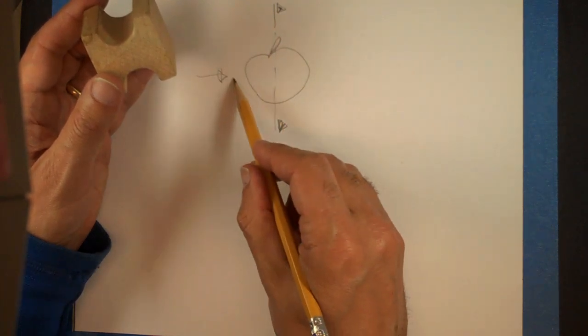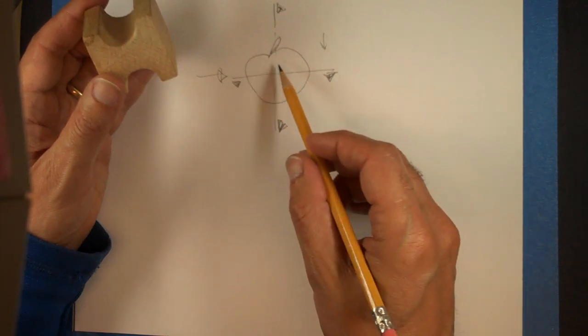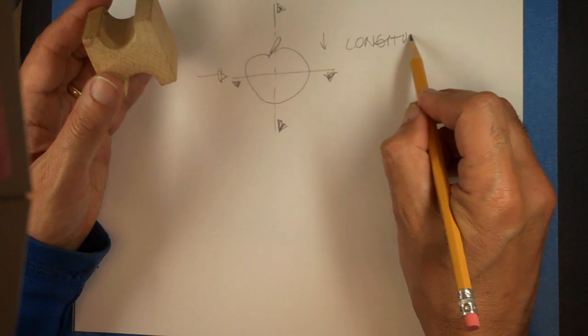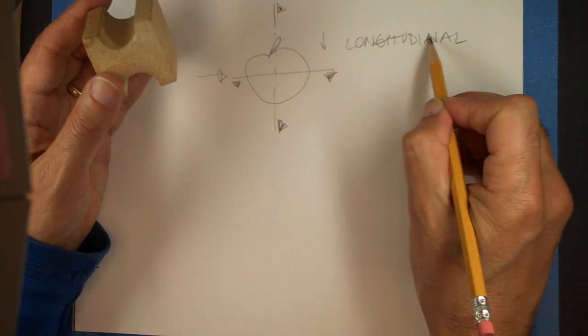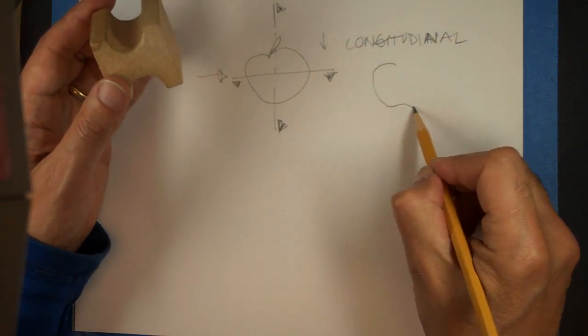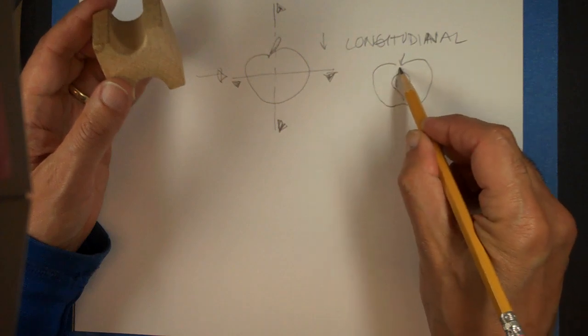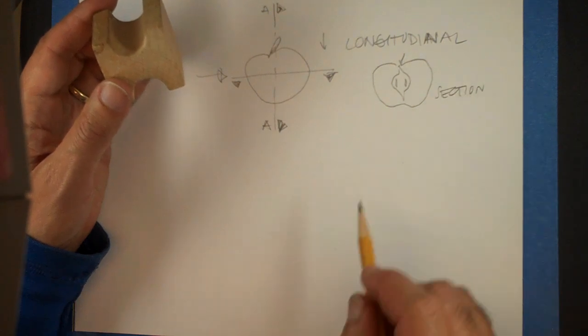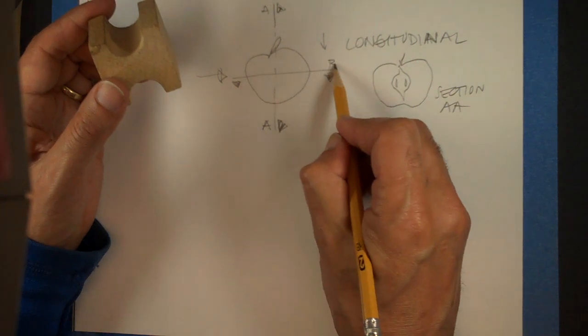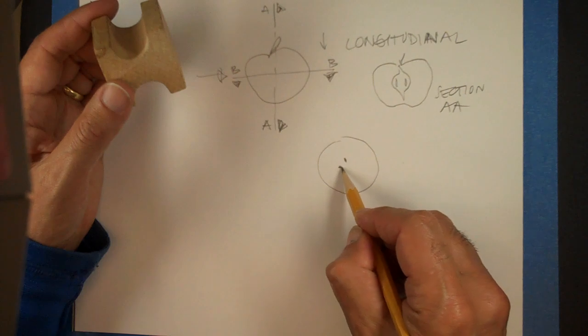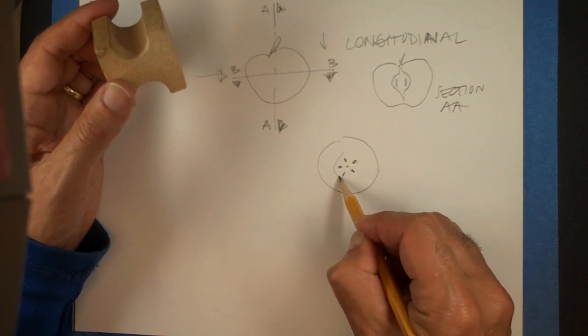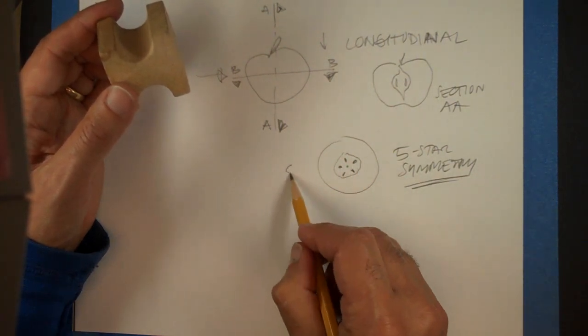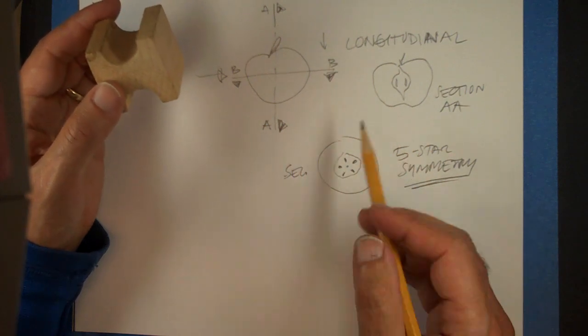Looking this way and looking this way, or sectioning it this way and looking down this way. We saw that when you section it in what might be called a longitudinal section, that just means the long side, then what you see is something like that. But when you cross it this way, you get an interesting thing where all of a sudden it reveals that the apple has a five star symmetry.